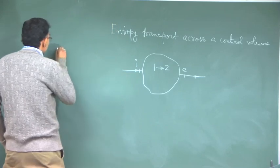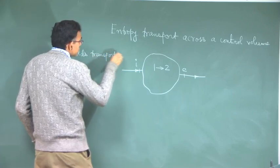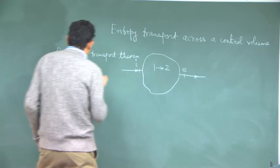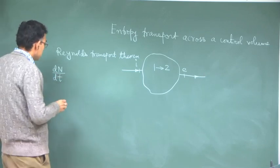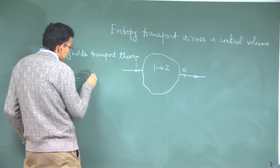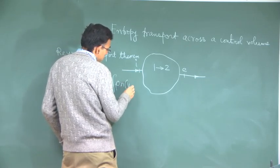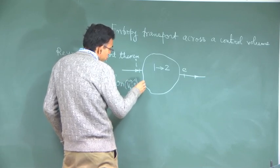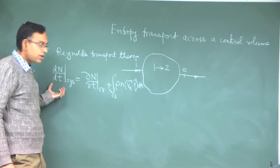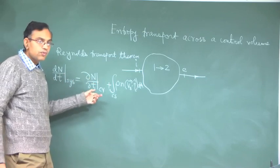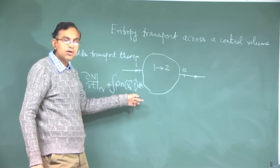The Reynolds Transport Theorem, as usual: this term is the net change of the extensive property N for a system, this is the change within the control volume, and this is the net transport of the property due to flow across the control surface.